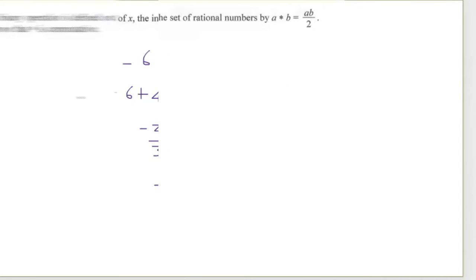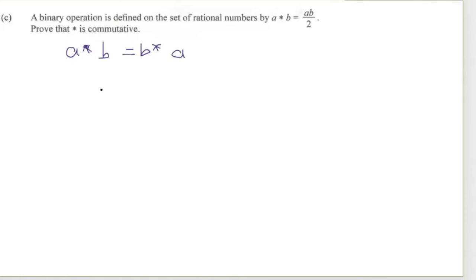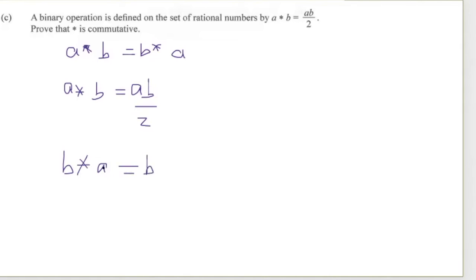The next question: a binary operation is defined on the set of rational numbers by a ∗ b = ab/2. We need to prove it is commutative, meaning a ∗ b = b ∗ a. For b ∗ a, replacing a with b and b with a gives ba/2. Since ba = ab (e.g., 2×4 = 4×2 = 8), we get ab/2, which equals a ∗ b. Therefore the operation is commutative.